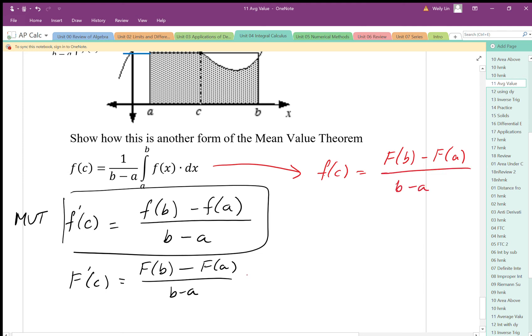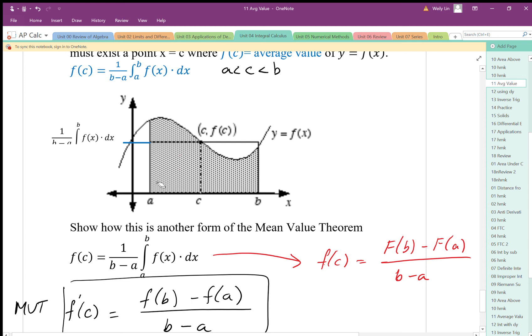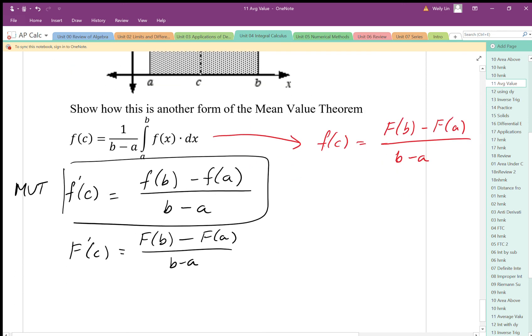So notice that this average value, being able to know that the average value must exist as an f of c coordinate between a and b, this is really just another form of the mean value theorem.